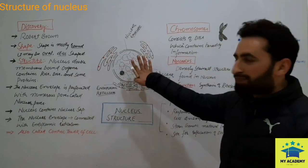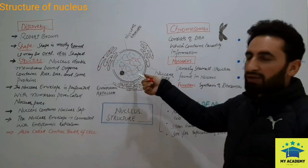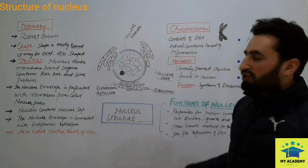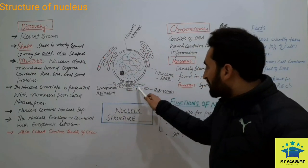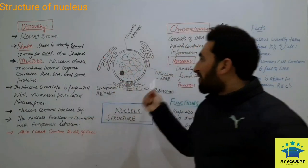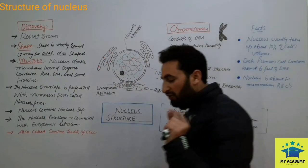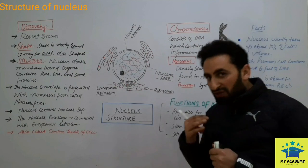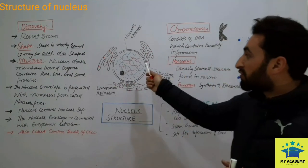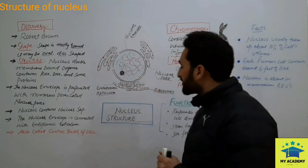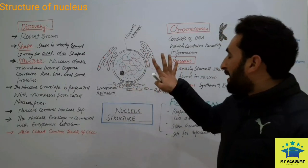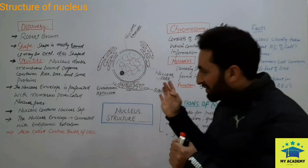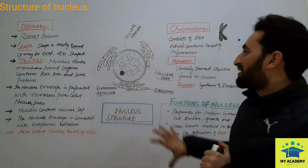The nucleus contains nuclear sap or nucleoplasm, and the nuclear envelope is connected with the endoplasmic reticulum — the outer membrane is the extension that forms the ER. The nucleus is called the control tower of the cell because it controls all the vital activities performed by the cell for survival. The nucleus lies at the center of the animal cell, but in plant cells it is located near the plasma membrane.